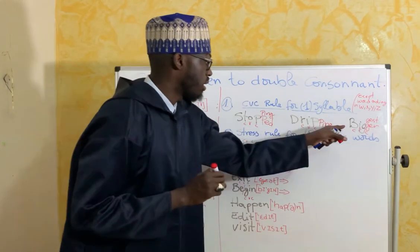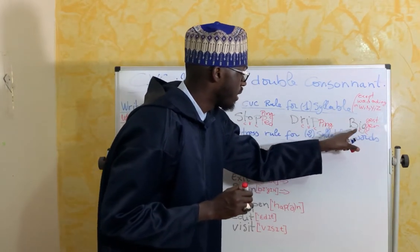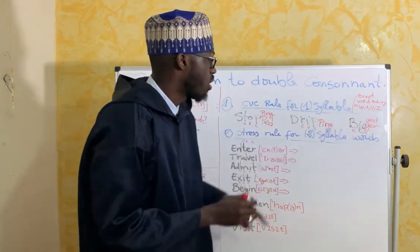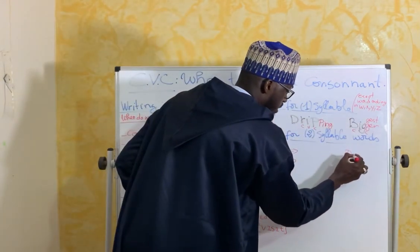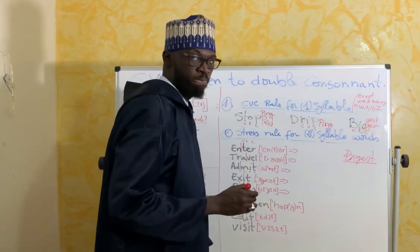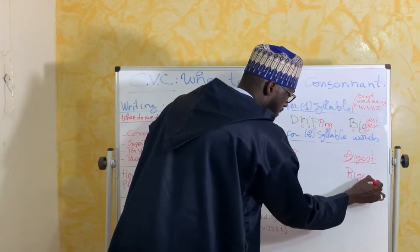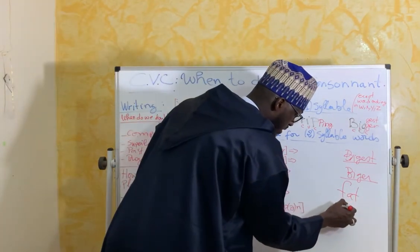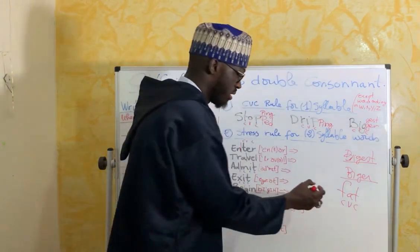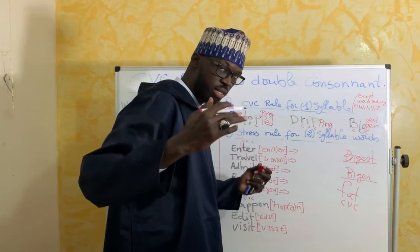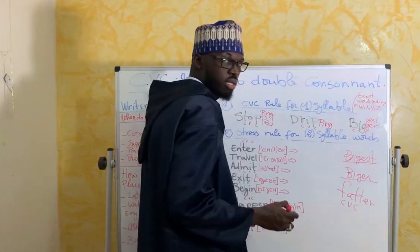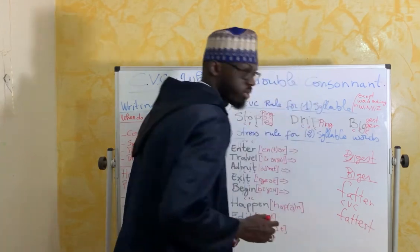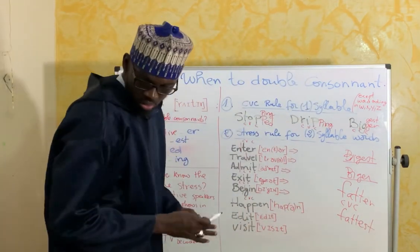'Big' — one syllable, C-V-C. For the comparative we double the consonant: 'bigger.' For the superlative: 'biggest.' Writing only 'bigger' or 'biggest' without doubling is a mistake. Same with 'fat': F-A-T is C-V-C, so for the comparative we say 'fatter,' always doubling the consonant.